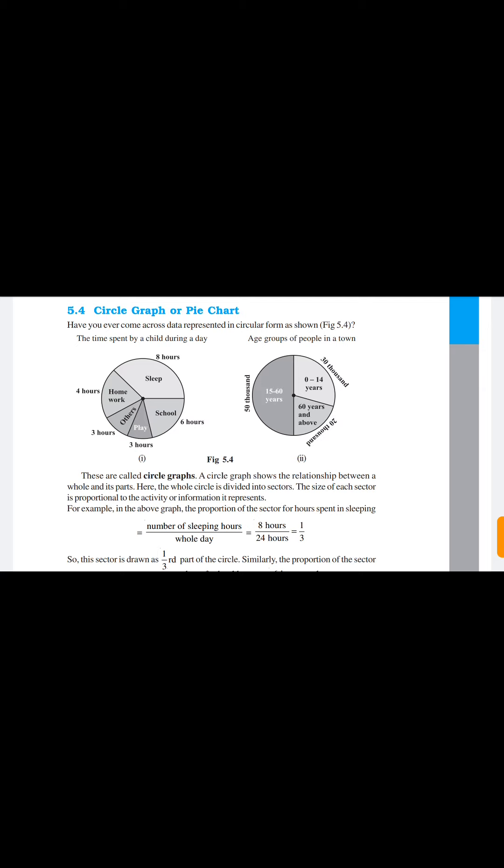A circle graph shows the relationship between a whole and its parts. The whole circle is divided into sectors. In the circle, the circle is divided into different parts, and these are called sectors. The size of each sector is proportional to the activity or information it represents. A smaller sector shows a smaller quantity of data, and a larger sector shows a larger quantity of data.